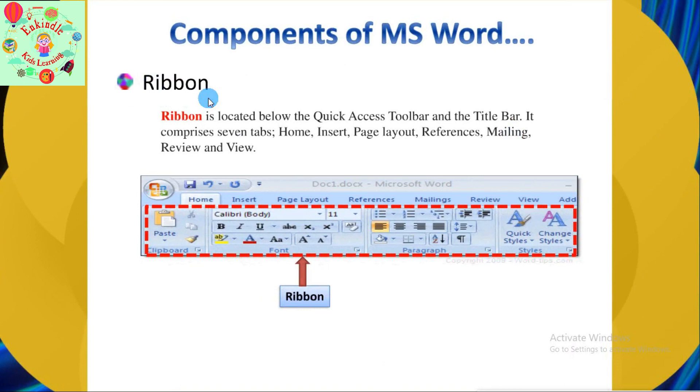The next component is the Ribbon. The Ribbon is located below the Quick Access Toolbar and the Title Bar. It comprises seven tabs: Home, Insert, Page Layout, References, Mailing, Review, and View.